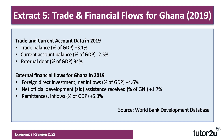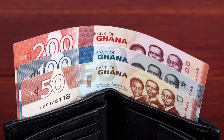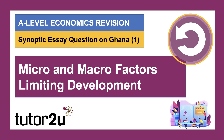Finally, some macro data: Ghana runs a trade surplus but a current account deficit, has relatively low external debt, quite significant FDI flows, and attracts some overseas aid of just under 2%. The biggest source of external finance for Ghana is remittances. That's the background data on Ghana. In the next three shorter videos, I'll take you through three different synoptic essay-style questions, starting with micro and macro factors limiting development in Ghana. If you're doing Edexcel Paper 3, work through these four videos — hopefully it'll be a useful revision resource. Take care, see you soon.